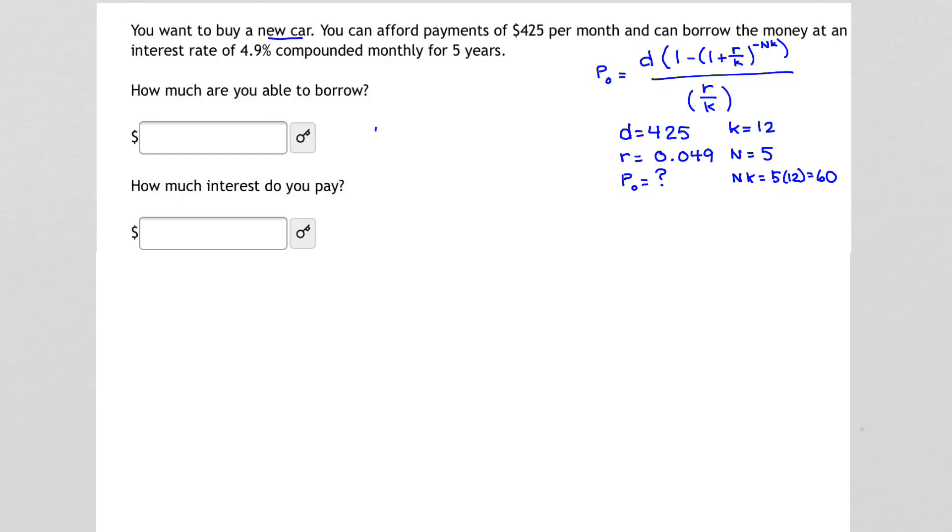I see that P0, or the amount that we're going to be able to borrow, is equal to 425 times 1 minus the quantity of 1 plus 0.049 divided by 12, raised to the negative 60, all divided by 0.049, all over 12.